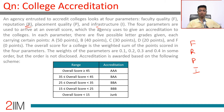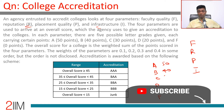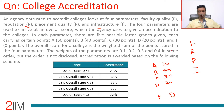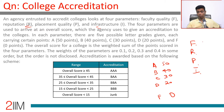In each parameter there are five possible letter grades, each carrying certain points: A is 50 points, B is 40, C is 30, D is 20, and F is 0. The overall score for a college is the weighted sum of points scored in the four parameters. The weightages are 0.1, 0.2, 0.3, and 0.4 in some order, but the order is not disclosed — so F could be any of 0.1, 0.2, 0.3, or 0.4, and so on.